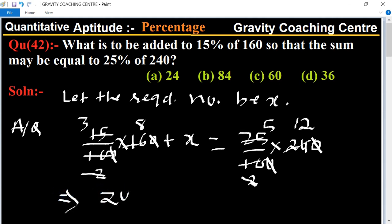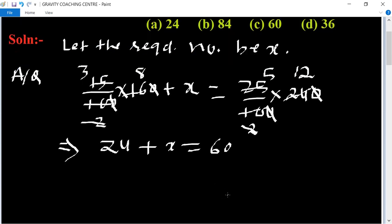24 plus x equals 60. This implies that x equals 60 minus 24, equal to 36.